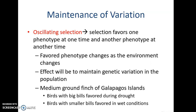Oscillating selection is selection that favors one phenotype at one time and another phenotype at another time. The favored phenotype changes as the environment changes, and the effect will be to maintain variation if that change keeps repeating. A good example is seasonal change, as seen in the ground finches of the Galapagos Islands. During drought, birds with big bills are favored because small, soft seeds run out but there are lots of larger, harder-shelled seeds. Birds with smaller bills, however, are favored during wet conditions because there are tons of small, soft seeds available.